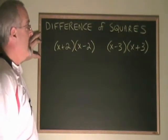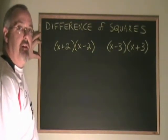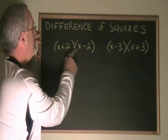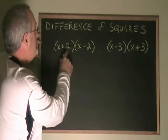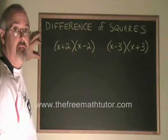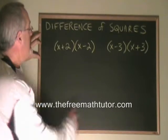Difference of squares is an expression that we get when we multiply two binomials where they have the same first term and the same second term, but one of them has a plus and the other has a minus. Let's see what happens when we multiply these.